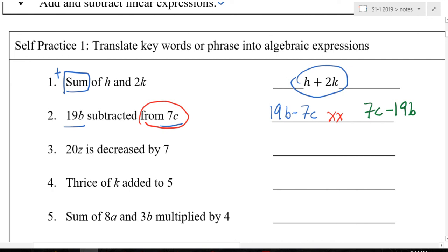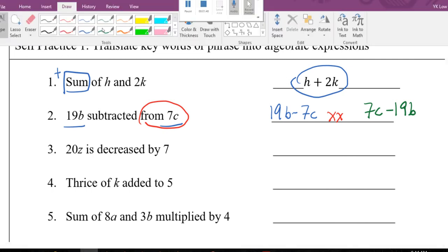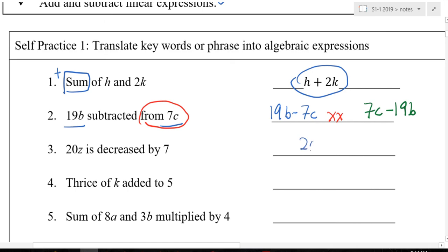20z decrease by 7. Very good. 20c minus 7. Okay, I pause the video here. You try the rest. To write down.